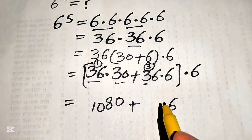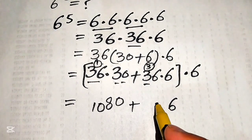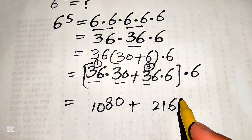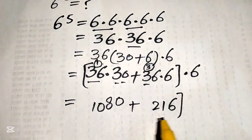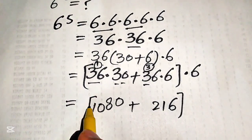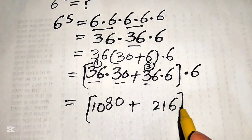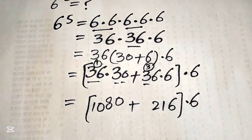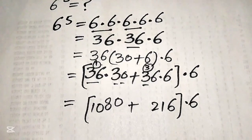In the same pattern we multiply 6 times 36: 6×6 = 36, write 6 carry 3; 6×3 = 18, plus 3 becomes 21. So now we need to sum up these two values and then multiply by 6.